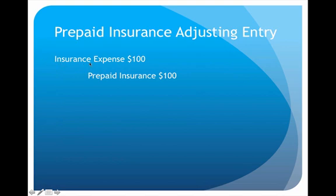We would debit insurance expense and credit prepaid insurance for $100. By doing so, we not only show the expense, but we show that the asset is being reduced. The original balance of prepaid insurance was $1,200, and once this entry is booked, it lowers the asset down to $1,100 — exactly what it needs to be because there are 11 months left on the insurance policy. You would do a very similar adjustment for any prepaid expense the business might have.